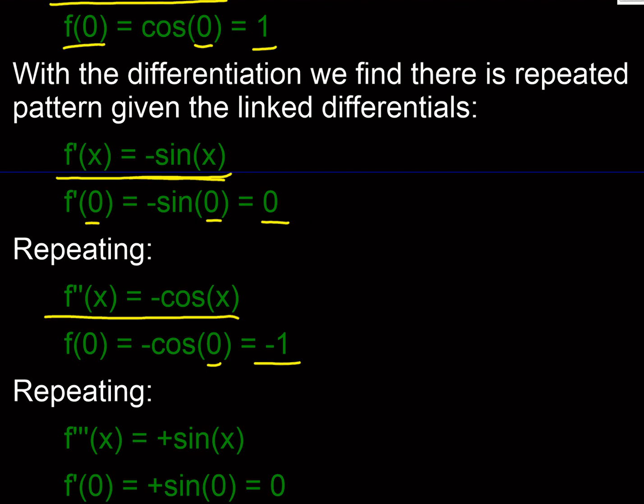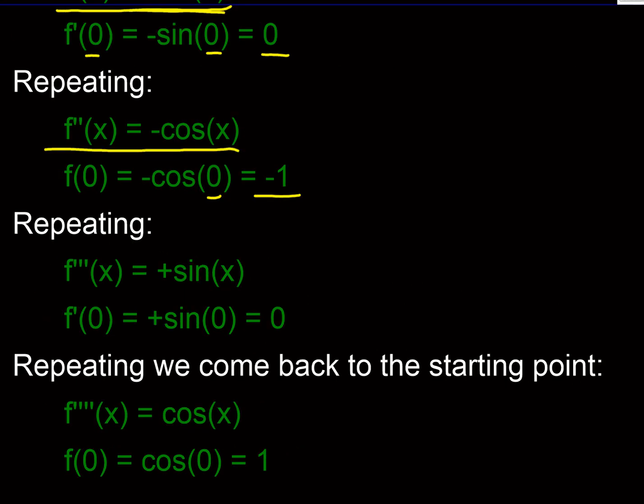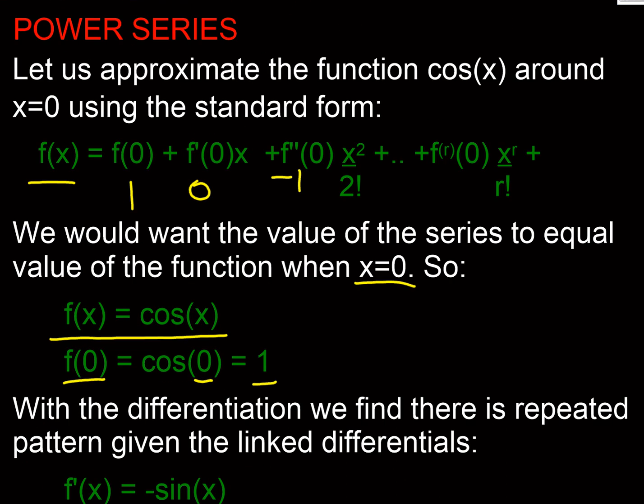And as you can predict we're going to get into a sequence because when we differentiate that one, minus cos becomes plus sin, and sin of 0 is 0. And so we now know that f triple dash would be 0.